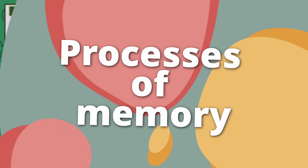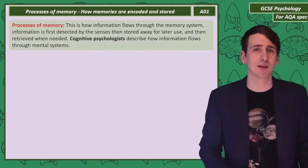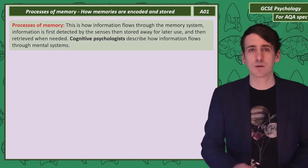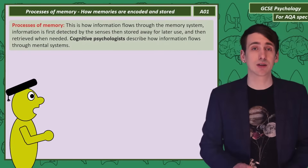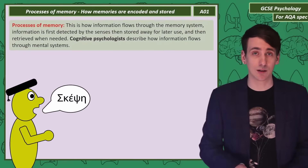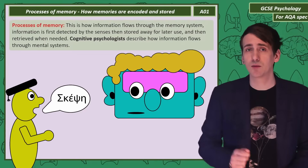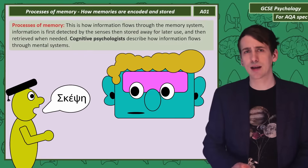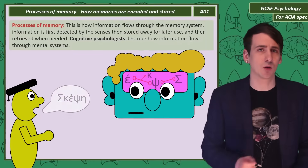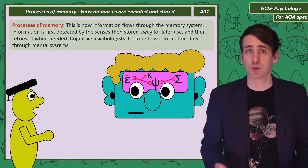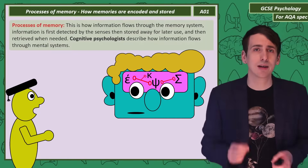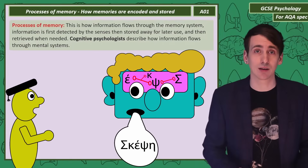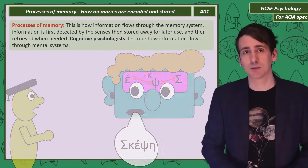Processes of memory. The whole idea of memory being a process is it's simply information flowing through a system. Think about it like this: your teacher tells you a fact. Your senses — in this case your ears — detect information from the environment, the words. After you detect that information, you have to store it somewhere. And then at some point, like your exam, you're going to need to take the information out of storage and actually use it. That's the process — that's the information flowing through the system.